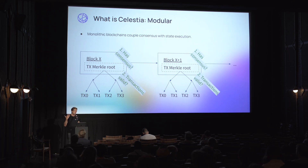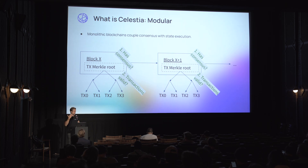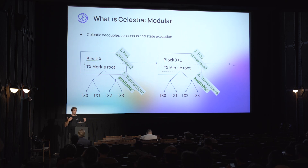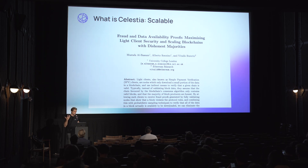Modularity comes from this idea that you can separate execution from consensus and data availability. Celestia, rather than verifying that transactions in a given block are valid, just verifies that the transactions are available. And then the piece on scalability: in 2018, Mustafa wrote a paper about data availability sampling, which is the first proposal for how you can build a blockchain where the block size and throughput scales with the number of nodes in the network.